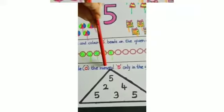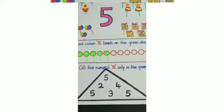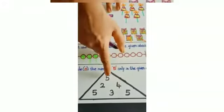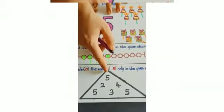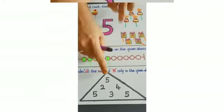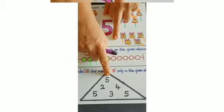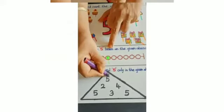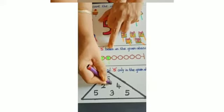Now, next question. Encircle the numeral 5 only in the given shape. Okay children. Here one triangle is given and mixed numbers are given, and you have to encircle only number 5. So ready children? Yes. Is this number 5? Yes children, very good. So you will encircle number 5.